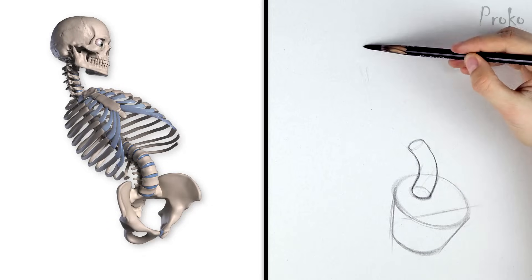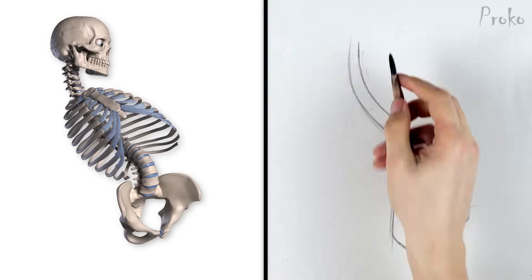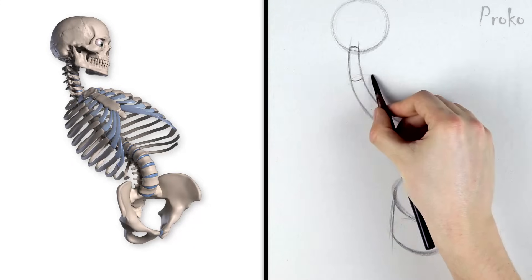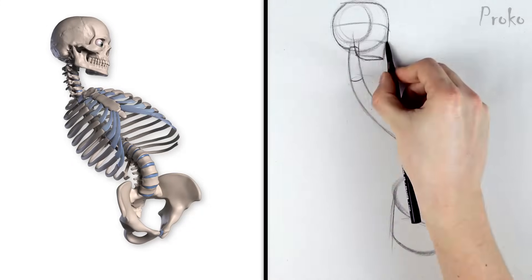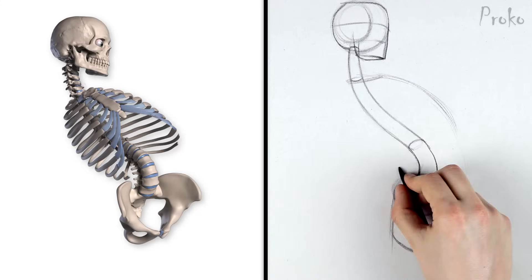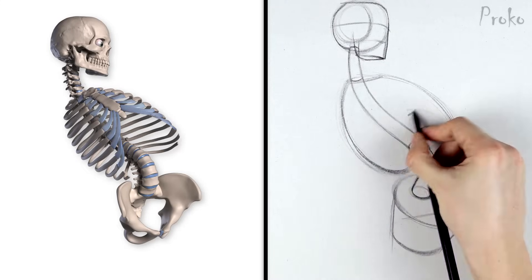In the assignment images, there are five images of Skelly in various poses. The challenge here is to simplify the bones into the simple volumes that I just showed you. This will help you get familiar with the shapes and their relationships.